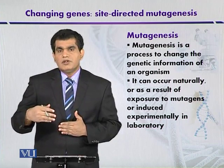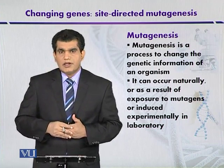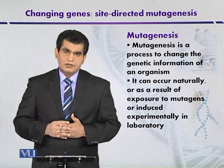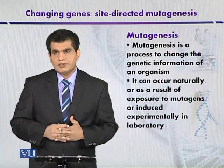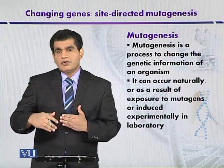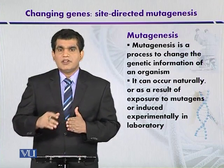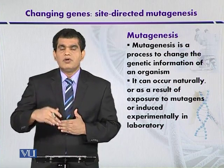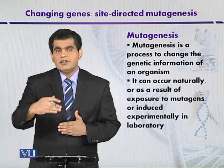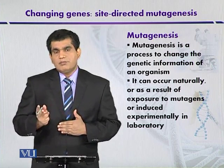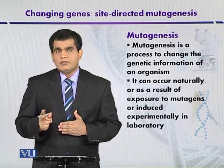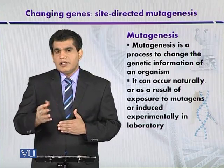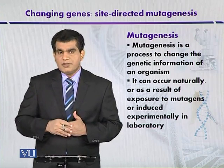Exposure to UV radiation is also an environmental factor that can cause mutagenesis. When UV radiation is exposed to DNA, the adjacent thymine residues can pair with each other. In this way, thymine dimers are produced, which can also hinder DNA replication.